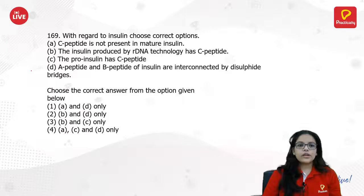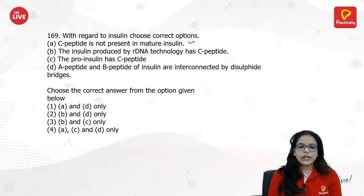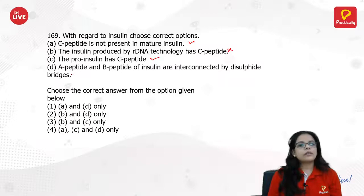With regard to insulin: the insulin produced by rDNA technology does not have C-peptide. Pro-insulin has C-peptide. The A and B peptides of insulin are interconnected by disulfide bonds. The correct options are A, C and D — option 1.